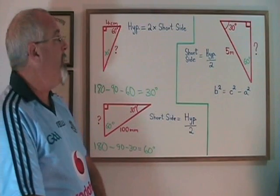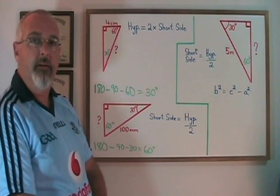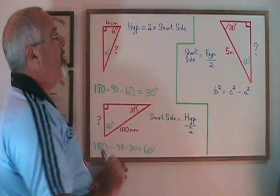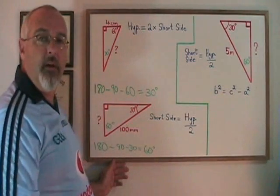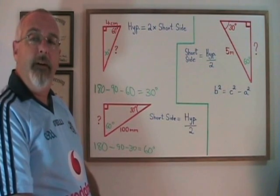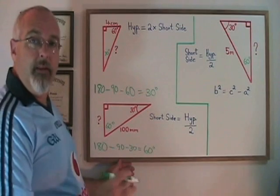The special property that affects only 30 degree, 60 degree, 90 degree right triangles is that in those triangles, the length of the hypotenuse is always equal to exactly double the length of the short side or short leg. This is not the only property that affects 30, 60, 90 triangles, but it is the property that we are dealing with in this video.